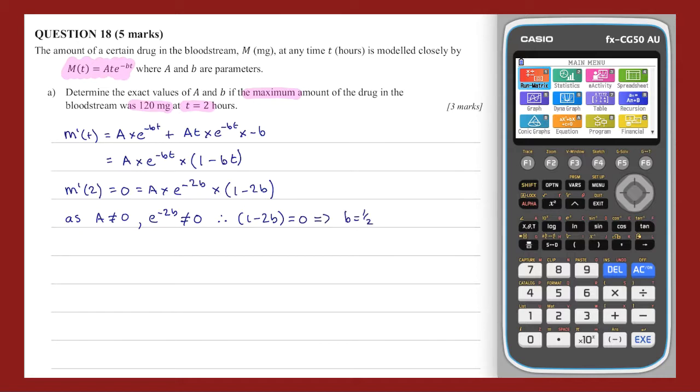Now that the value of b is known, I can find A using the information that at time t equals 2, the amount is 120 mg, i.e. m of 2 equals 120. This allows me to write down a second equation. This can be rearranged to find that A equals 120 divided by 2 times e to the minus 1, which can be simplified to A equals 60e.